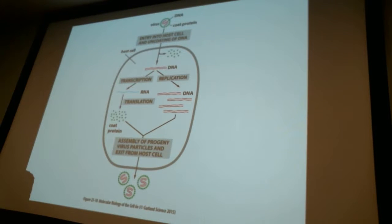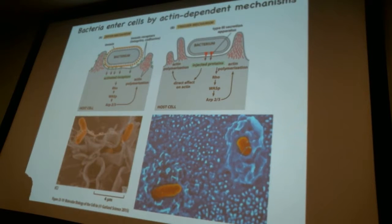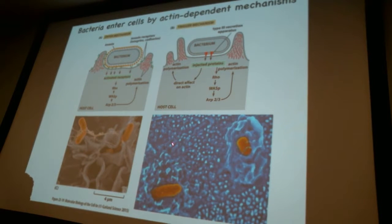Viruses take the cytosolic pathway every time, because they need access to the transcription and translation machinery of the whole cell. Bacteria have really been an amazing source for understanding mechanisms that pathogens can use to subvert cellular pathways and gain access to cells.